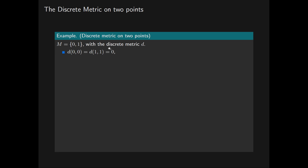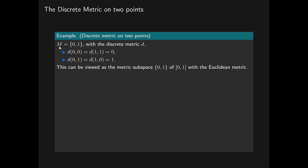The discrete metric satisfies the following: the distance from 0 to itself and from 1 to itself is 0, which is a necessary condition for d to be a metric. The distance from 0 to 1 equals the distance from 1 to 0, and both equal 1. Equivalently, this metric space is the metric subspace consisting of the two points 0 and 1 of the closed interval [0, 1] with the Euclidean metric.